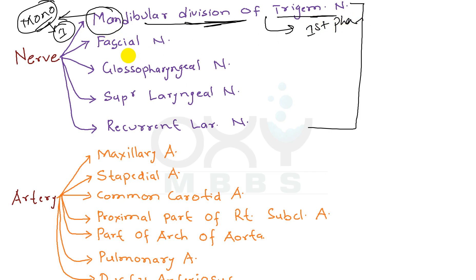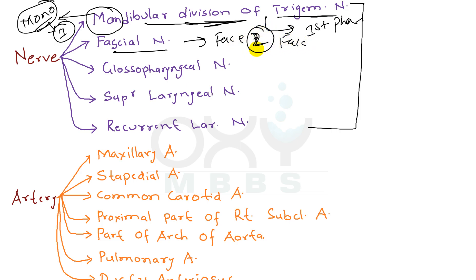Now coming to the facial nerve. 'Talk face to face' — so from this mnemonic it is the second pharyngeal arch. It means the facial nerve is derived from the second pharyngeal arch.